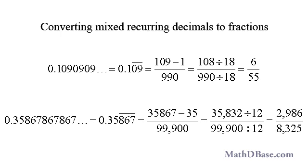In 0.35867867867 continuous, there is a non-repeating pair of digits, 35, and a repeating group of three digits, 867. The numerator of the fraction will be 35867 minus 35, and the denominator will be 99,900. After reducing, the fraction becomes 2986 over 8325.